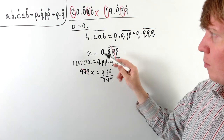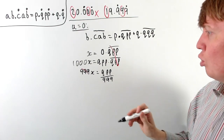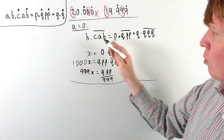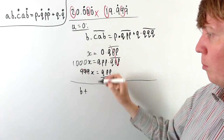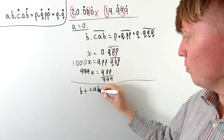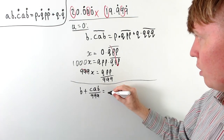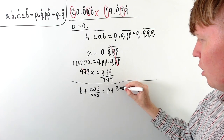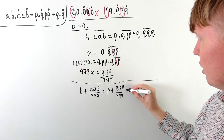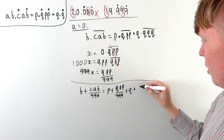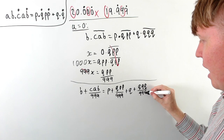This transforms our equation into: b plus cab/999 equals p plus qpp/999 plus q plus qqq/999.